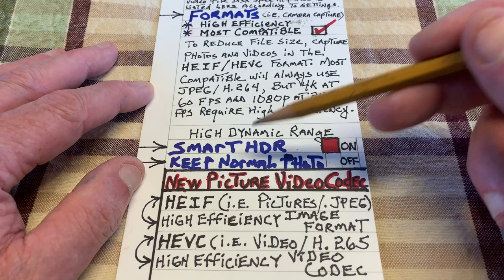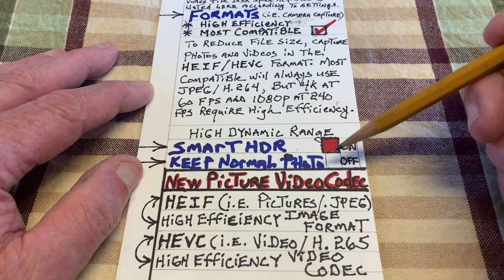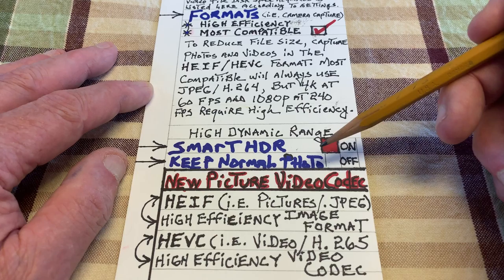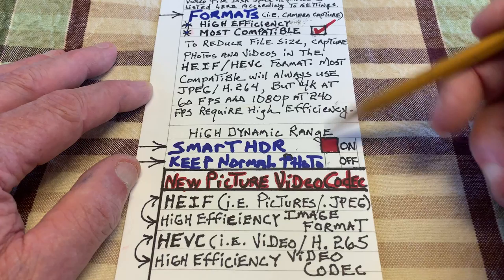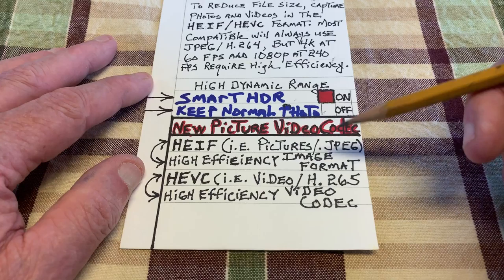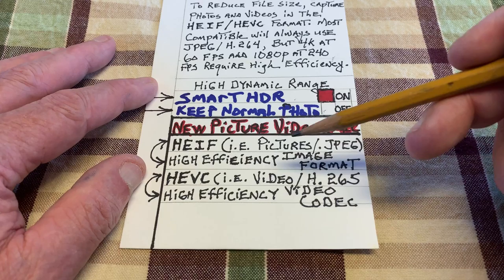As you move down the menu you'll come to High Dynamic Range. I highly recommend that you check Smart HDR. When you take pictures with Smart HDR enabled, your iPhone takes like 6 or 8 pictures, picks out the best 3 or 4, and sandwiches them together into a Smart HDR high dynamic range photo. If you also check Keep Normal Photos, you'll get both a normal photo and a Smart HDR photo — two photos.